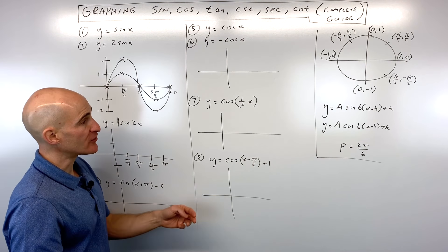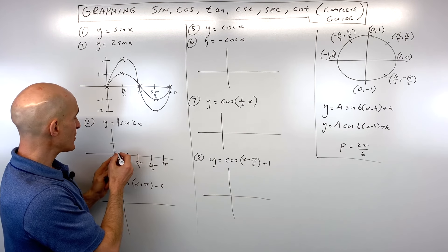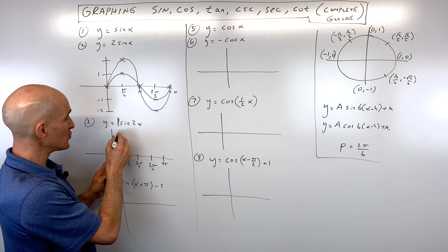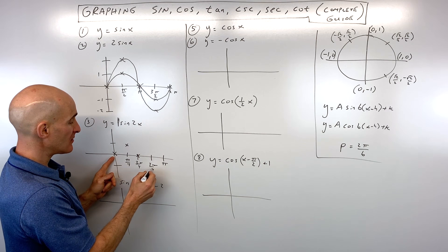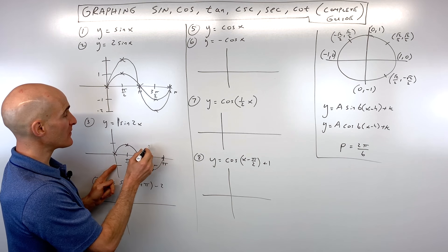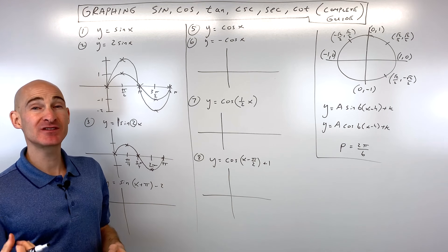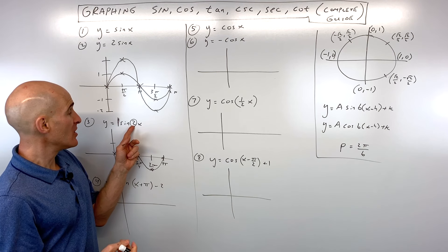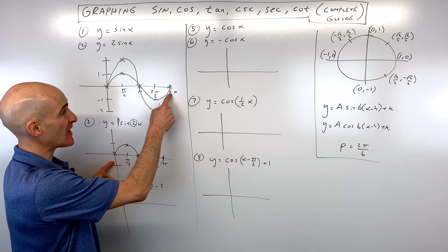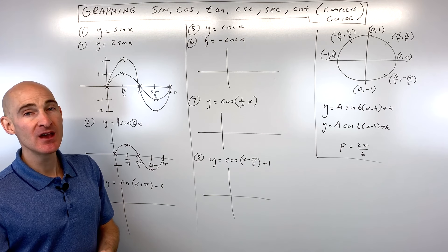The amplitude is one because it hasn't been stretched vertically at all. We haven't talked about the shifts yet — that's the h and the k that move the graph left and right and up and down. So this graph has the basic shape again: it starts at the midline, goes up to the maximum of one, back to the midline, down to the minimum of negative one, back to the midline. The only thing different here is that the period changed to pi. Notice that this b value has the opposite effect — instead of multiplying the x's by two, we actually divided them.